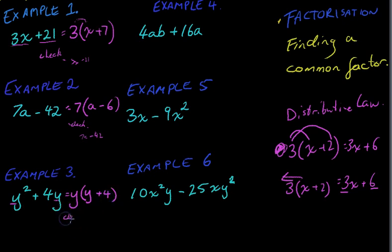Now, again, I can check my work, make sure I'm right. y times y is y squared. y times 4 is 4y. So, y squared plus 4y. That's what I started with, so I must have done that right. Continuing. So, obviously, example 3. That changed a little bit because one of the letters was our common factor.